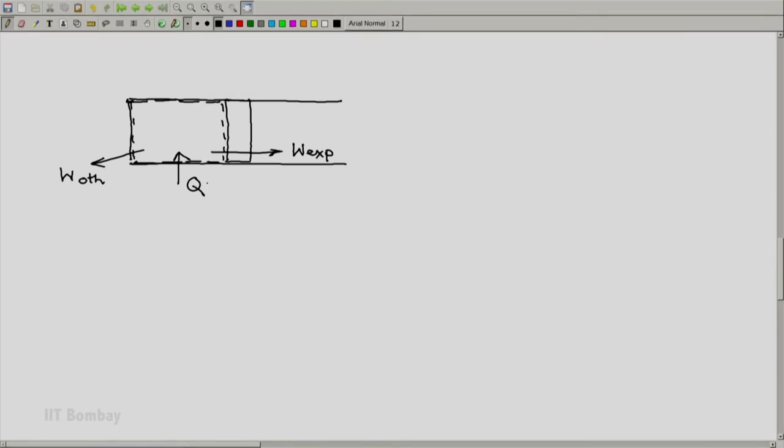And we have used the first piece of information that it is a closed system here. Now it is given that it is an adiabatic process. Adiabatic process means DQ will be zero throughout the process. That is another piece of information, information 4 in our list. And that means this Q is going to be zero. There will be no heat transfer.